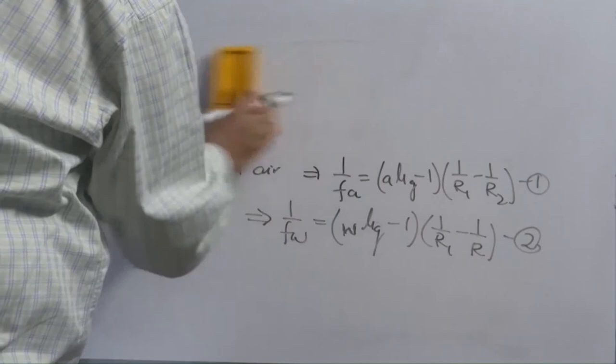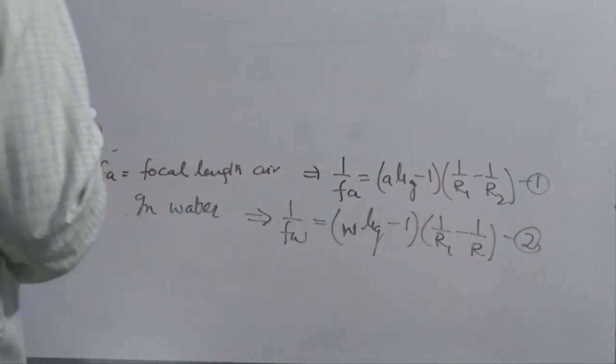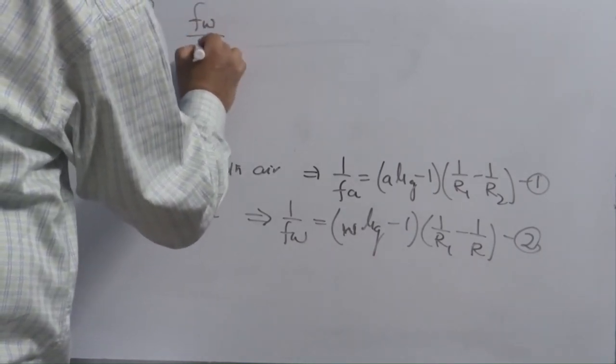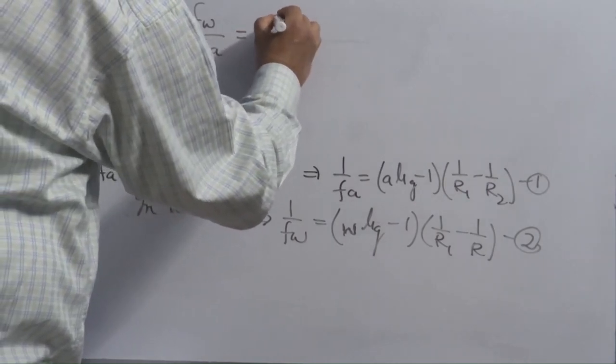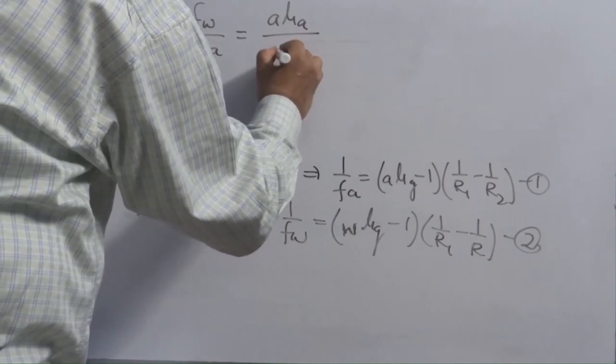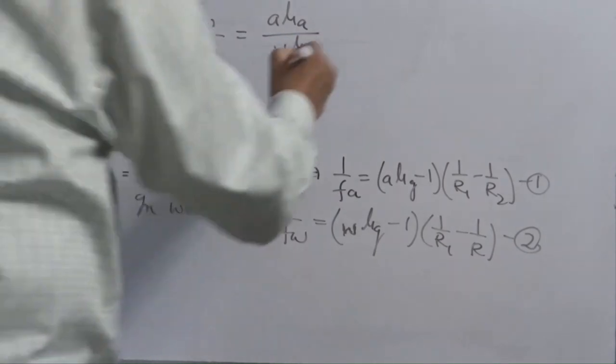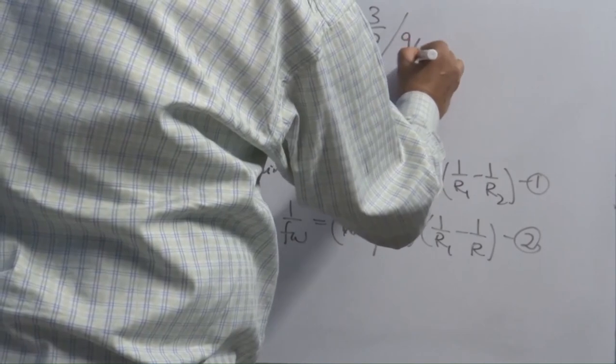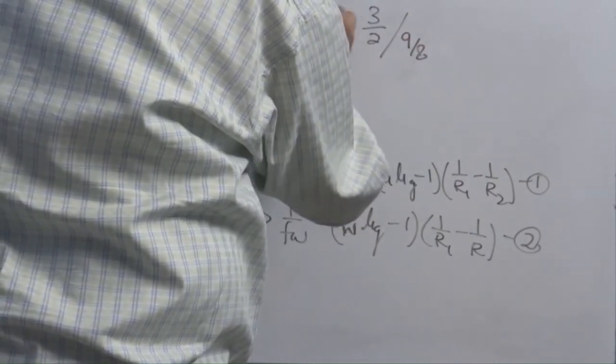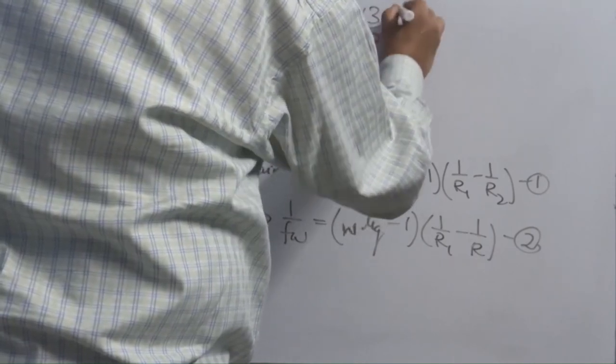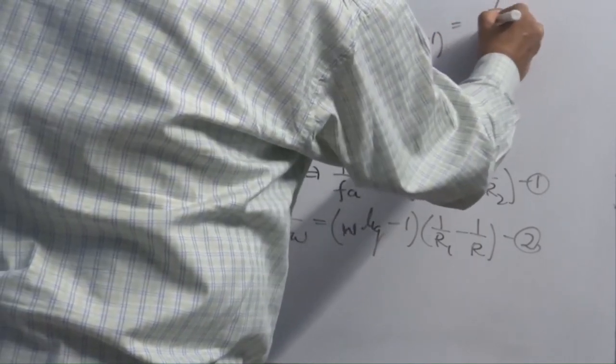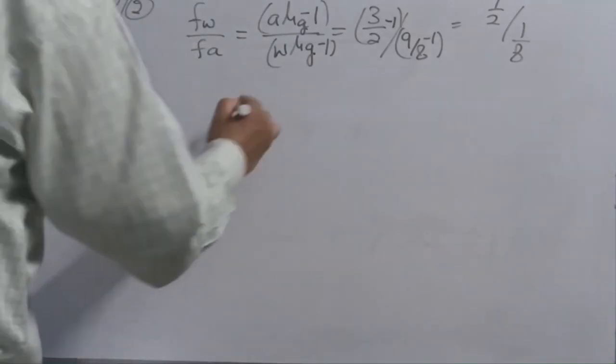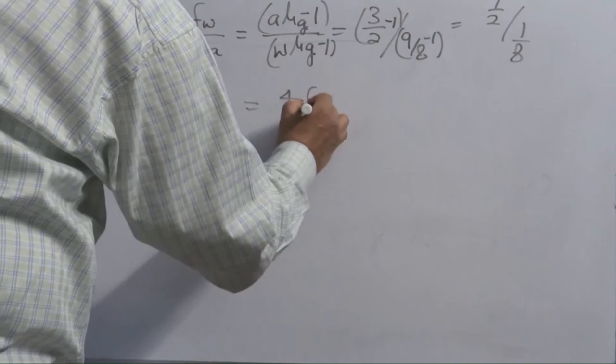Divide equation 1 by 2. You can calculate the focal length of lens in water. What you will have? When you divide 1 by 2, you will obtain Fw over Fa is equal to A mu G over W mu G. A mu G is 3 by 2. W mu G, when you calculate, you will get 9 by 8. So minus 1, minus 1, minus 1 here, minus 1 here. So it is 1 by 2 by 1 by 8. What you will have? 4. So Fw is equal to 4a.